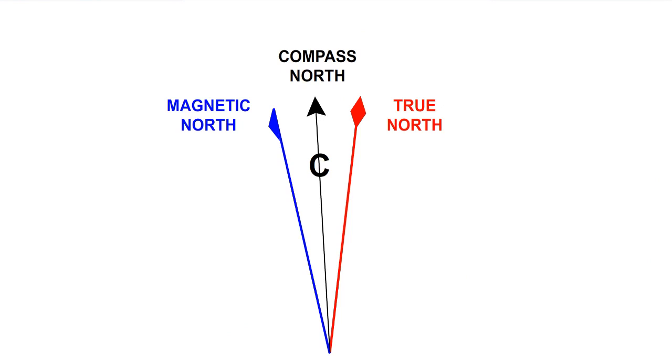Deviation is defined as the angle measured at a point between the direction indicated by a compass needle and the direction of magnetic north. The compass actually points to compass north, as opposed to magnetic north.